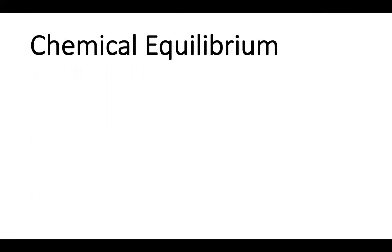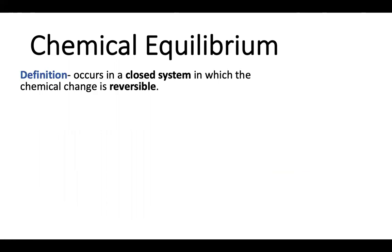Now what is a chemical equilibrium? In the other lesson we were talking about something very similar. The definition is that this occurs in a closed system in which the chemical change is completely reversible.